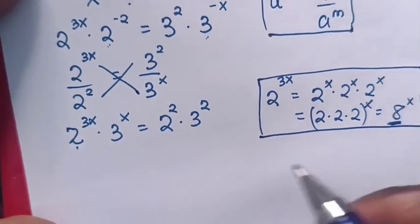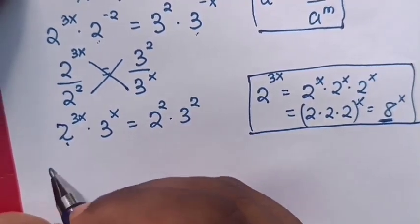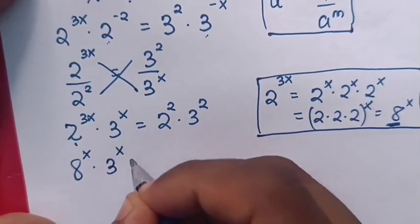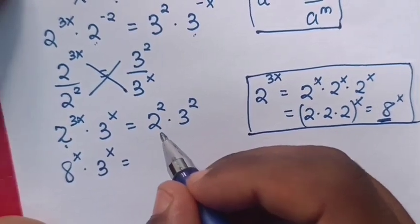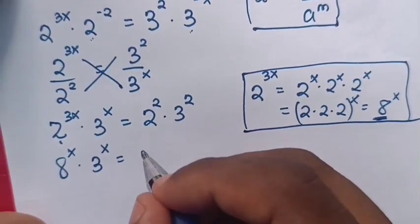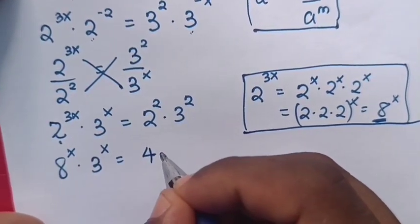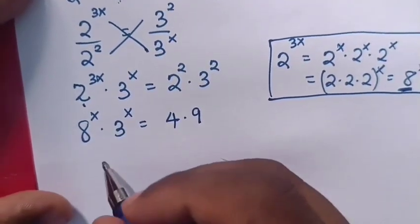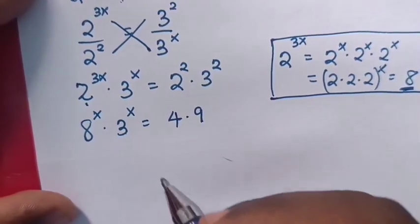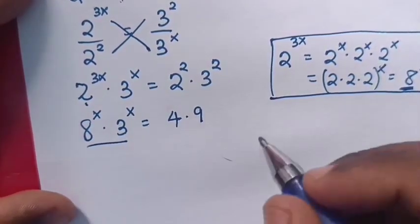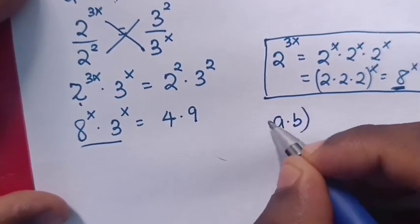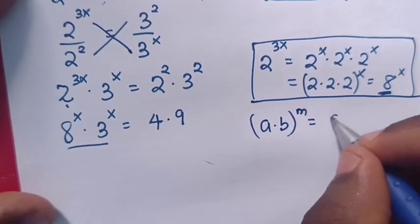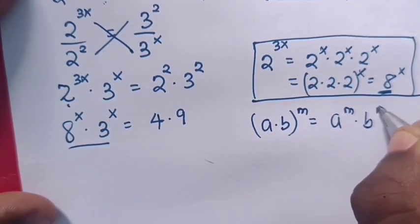Then, from 2 power 3x is same as 8 power x, so 8 power x times 3 power x is equals to 2 power 2 — that is 4 — times 3 power 2 — that is 9 — which gives 36. We will apply the exponential rule that a times b, bracket power m, is equals to a power m times b power m.